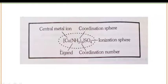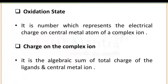The central metal ion present in this compound is Cu, that is copper. Next terminology is oxidation state, which simply is the number representing the electrical charge — the charge on the central metal atom of a complex ion. Next terminology is the charge on the complex ion — the total charge is the algebraic sum of the charges of the ligands and the central metal ion.